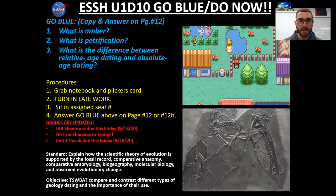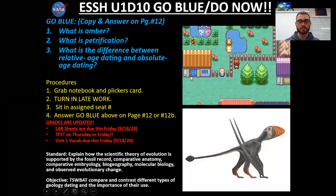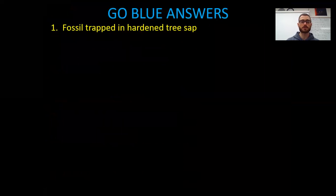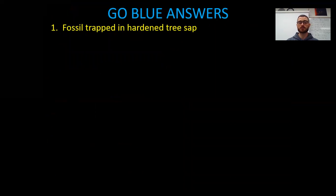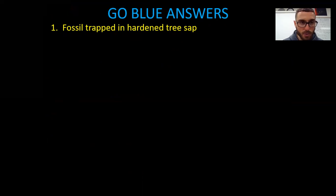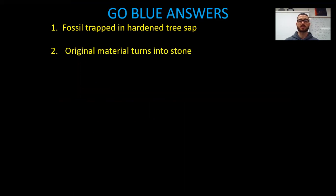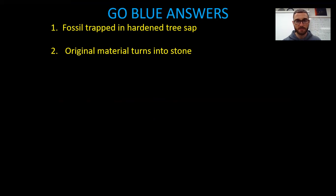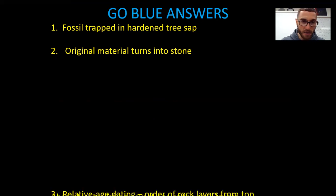Number one: amber, simply put, is going to be hardened tree sap — a fossil trapped in hardened tree sap. Think of those yellow, kind of transparent stones that have insects in them. And then two, petrification is going to be when original material turns into stone. Anything being turned from whatever it was before into stone — that's another way you can get fossils.